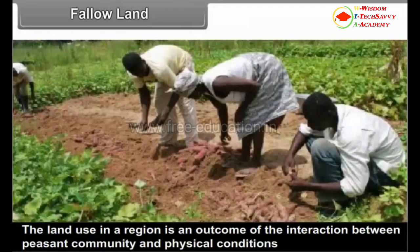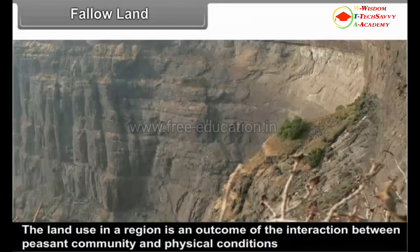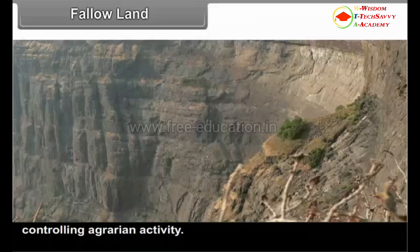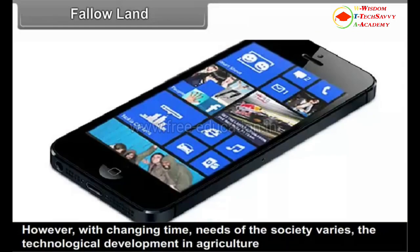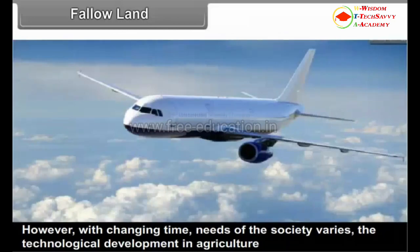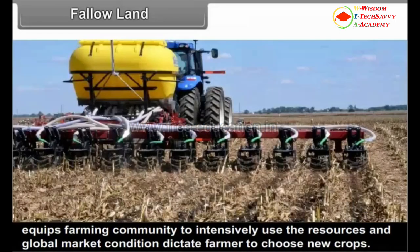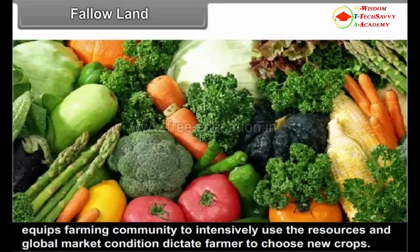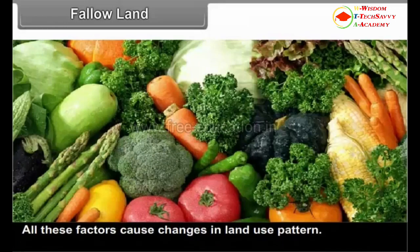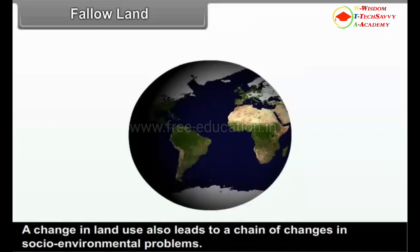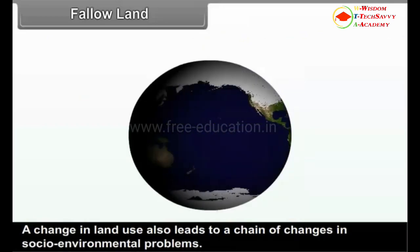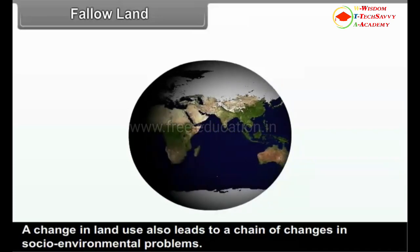The land use in a region is an outcome of the interaction between the peasant community and physical conditions controlling agrarian activity. However, with changing time, needs of society vary. Technological development in agriculture equips the farming community to intensively use resources, and global market conditions dictate farmers to choose new crops. All these factors cause changes in land use pattern. A change in land use pattern also leads to a chain of changes in socio-environmental problems.